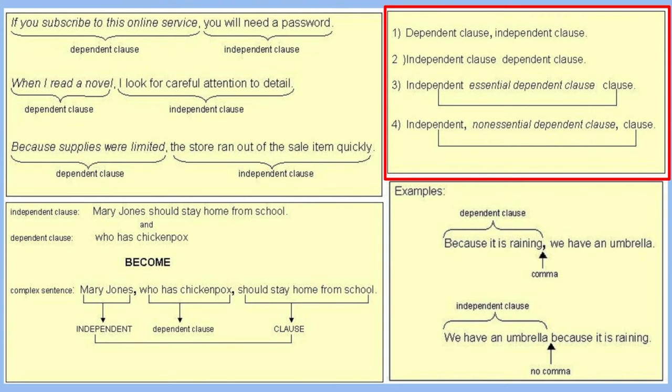Now for essential and non-essential clauses. An essential clause is embedded within an independent clause without commas, while a non-essential clause is embedded and surrounded by commas. For instance, take the independent clause 'Mary Jones should stay home from school' and the dependent clause 'who has chicken pox.' Here, 'who has chicken pox' is not essential because it doesn't take away from the meaning of the sentence when you remove it. Therefore, we see that it's surrounded by commas.